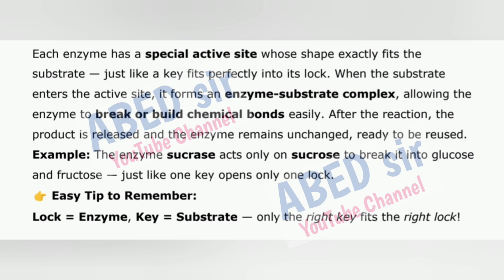When the substrate enters the active site, it forms an enzyme-substrate complex, allowing the enzyme to break or build chemical bonds easily. After the reaction, the product is released and the enzyme remains unchanged, ready to be reused. Example: the enzyme sucrase acts only on sucrose to break it into glucose and fructose, just like one key opens only one lock.